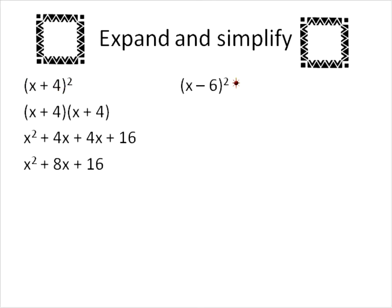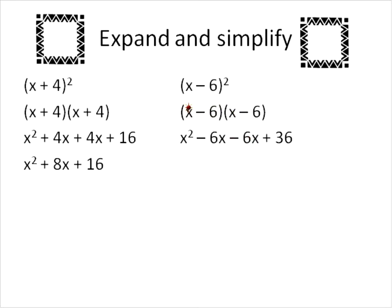Now let's go over here. This one here has a negative in it. It means exactly the same thing, x minus 6 times x minus 6. And we're going to solve it in exactly the same way. We'll take this x times the first term, x squared, x times the second term, which will give us negative 6x. We'll then look at the negative 6 and multiply that times the first term, gives us negative 6x. And the negative 6 times the last term, negative 6 times negative 6, will give us a positive 36. We'll join together our like terms of negative 6x and negative 6x to give us negative 12x and our final simplified trinomial.